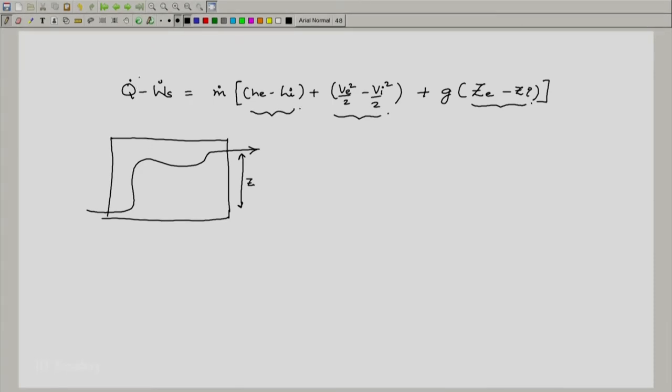But overall, we expect that it is well insulated and this is nearly equal to zero. We definitely do not expect shaft work out. There is no work output expected. So this we put as zero. So what do we get as first law?